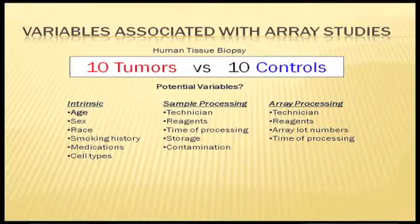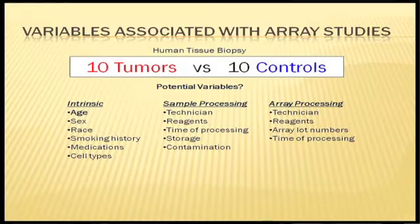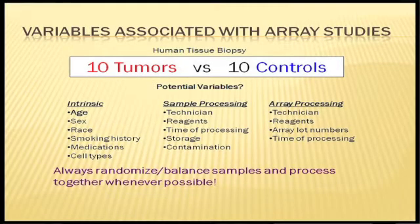And again, we've talked about array processing here, technicians, reagents, basically what this all comes down to, or the big underlying theme is you always want to randomize or balance your samples and process together whenever possible, right? You don't want to do all your controls at one time and then do all your experimentals at others. If it's going to take you a while for your experimental set to be ready, your mice to sacrifice them, store your tissue from your controls. Wait until you harvest from your experimental group and process together. Always try to process together. I can never stress this enough.